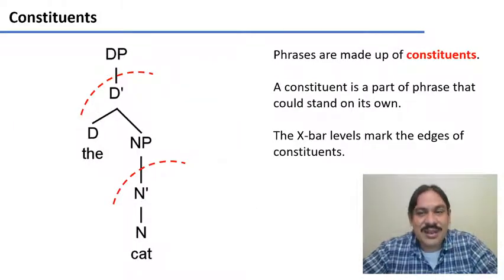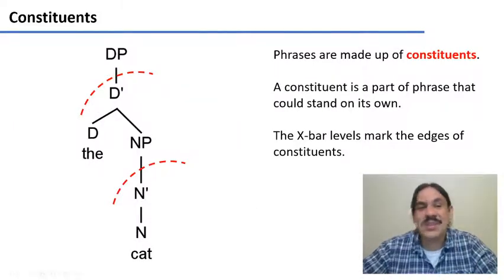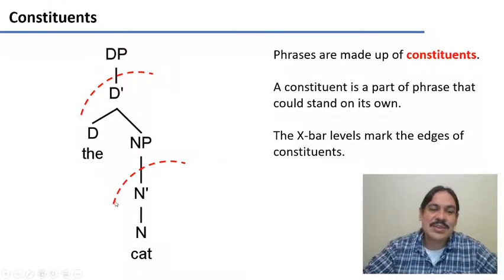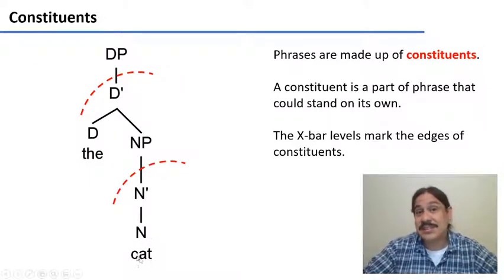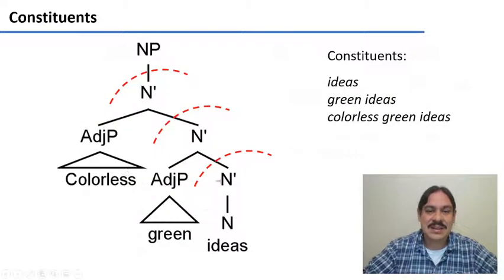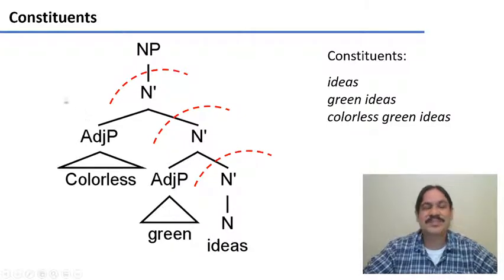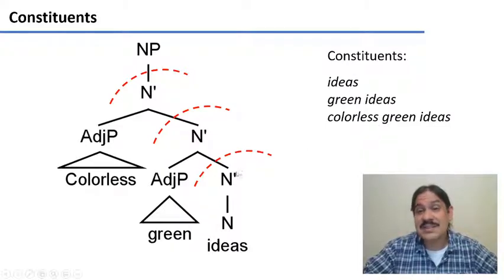The x-bar levels are there to mark the edges of constituents. If you take a look at every x-bar we've done this week, you'll notice that you could say everything below the x-bar level and it would be a phrase that could stand on its own — like 'cat,' 'the cat.' In 'colorless green ideas,' you can have 'ideas,' 'green ideas,' 'colorless green ideas.' Constituents are parts of the phrase that could stand on their own and still make sense, and they are delimited by the bar levels.